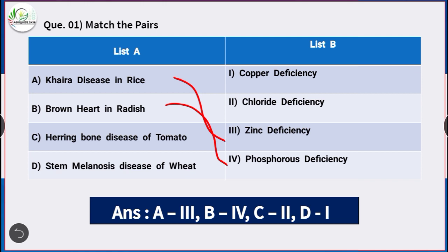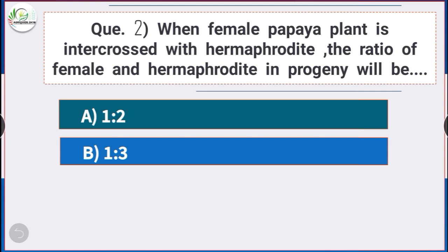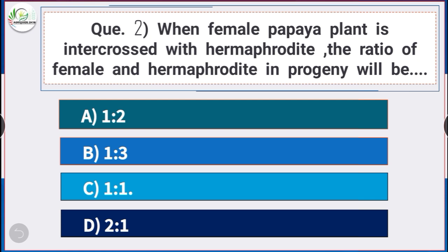Stem melanosis disease of wheat is caused due to copper deficiency. Question number 2: When a female papaya plant is intercrossed with a hermaphrodite, the ratio of female and hermaphrodite in the progeny will be 1:1 (option C).